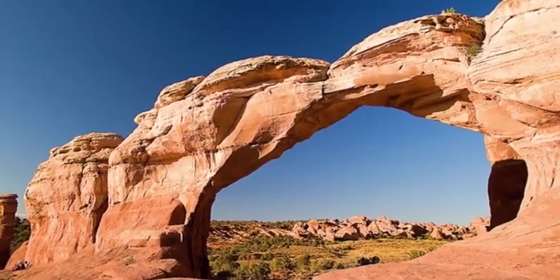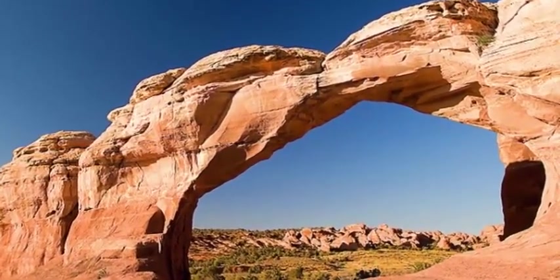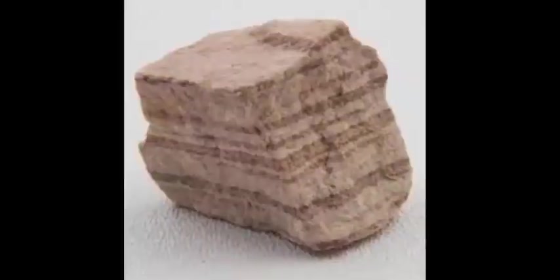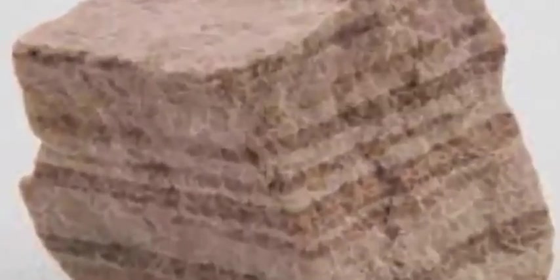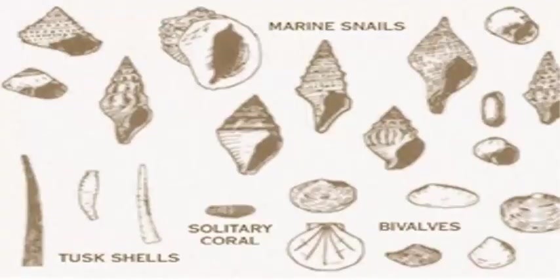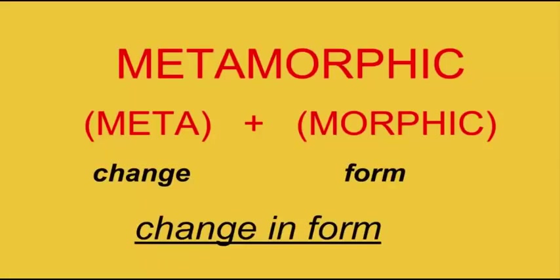Now let's learn about sedimentary rock. Sedimentary rocks are formed by the deposition of material at the earth's surface and within bodies of water. A common example is sandstone — a rock made of compressed sand. In between the layers of compressed sand, sedimentary rocks may also contain fossils of plants, animals, and other microorganisms.